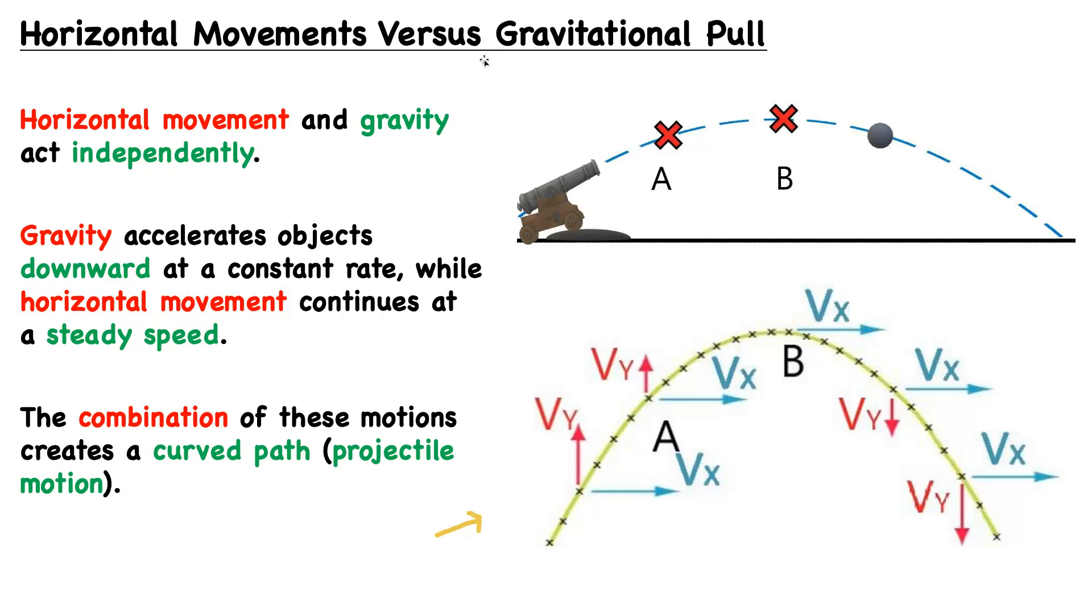What we can observe is that the x component remains the same at point A as point B, and it will continue to remain the same all the way through its trajectory, ignoring air resistance.